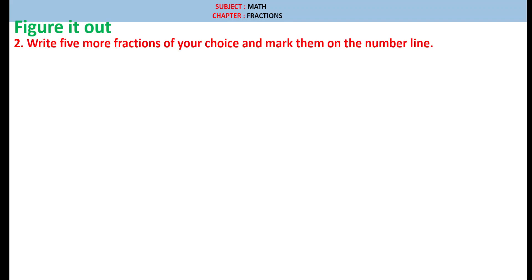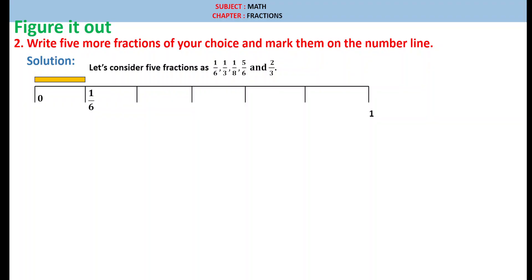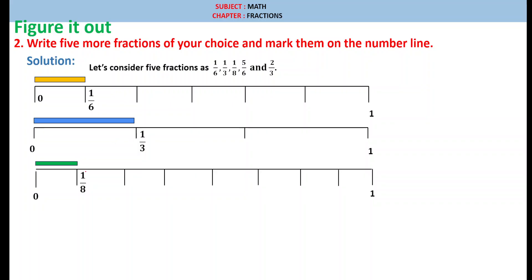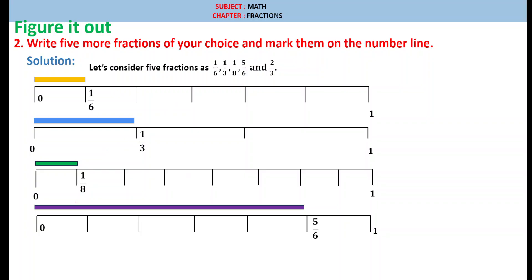Question number 2: write 5 more fractions of your choice and mark them on the number line. Solution: let us consider 5 fractions as 1 by 6, 1 by 3, 1 by 8, 5 by 6, and 2 by 3. For 1 by 6, we divide 1 into 6 equal parts and the first part is 1 by 6. For 1 by 3, we divide into 3 equal parts and the first part is 1 by 3. For 1 by 8, we divide 1 into 8 equal parts and the first part is 1 by 8. For 5 by 6, we divide 1 into 6 equal parts: 1 by 6, 2 by 6, 3 by 6, 4 by 6, and the fifth line is 5 by 6.